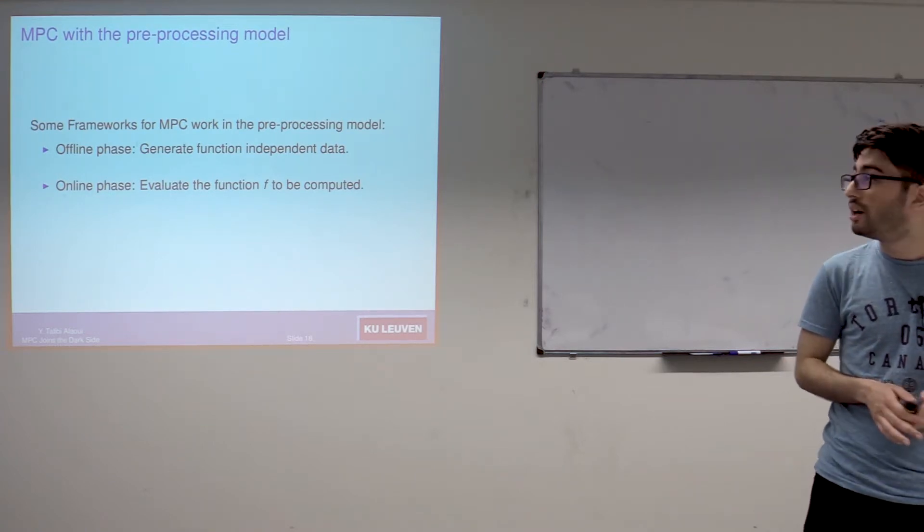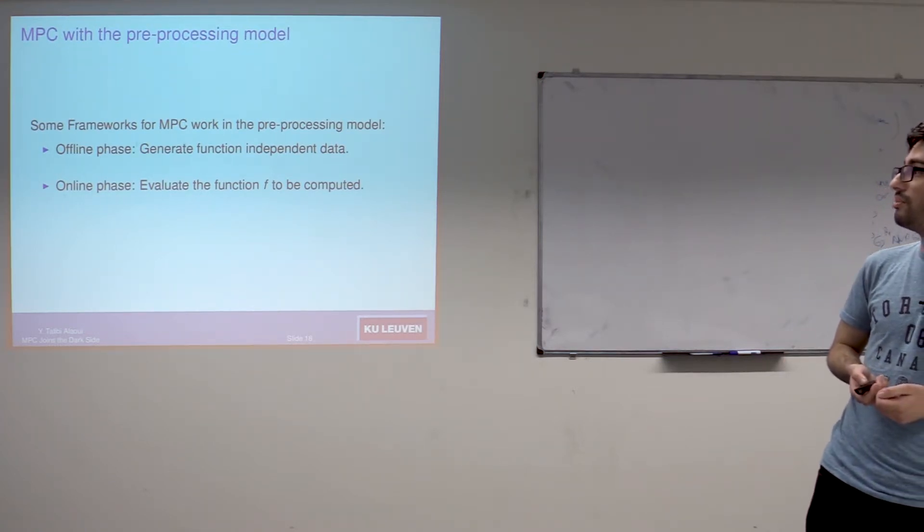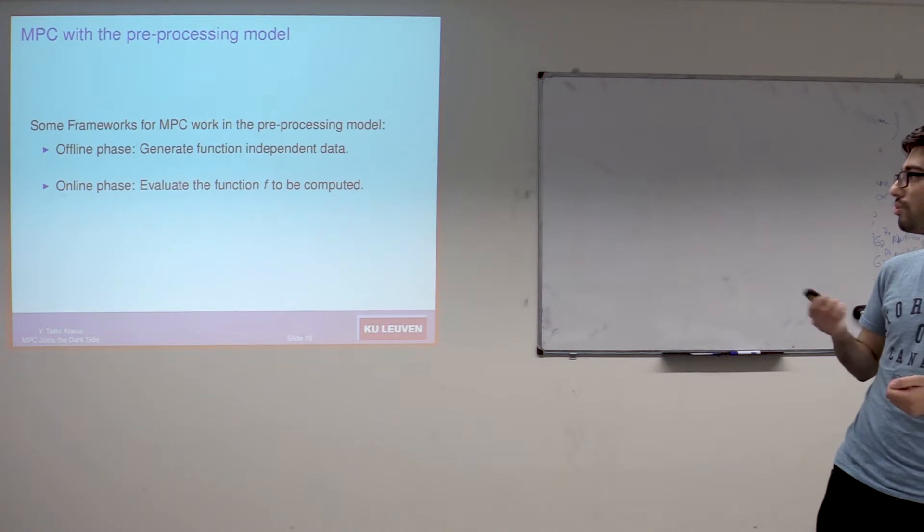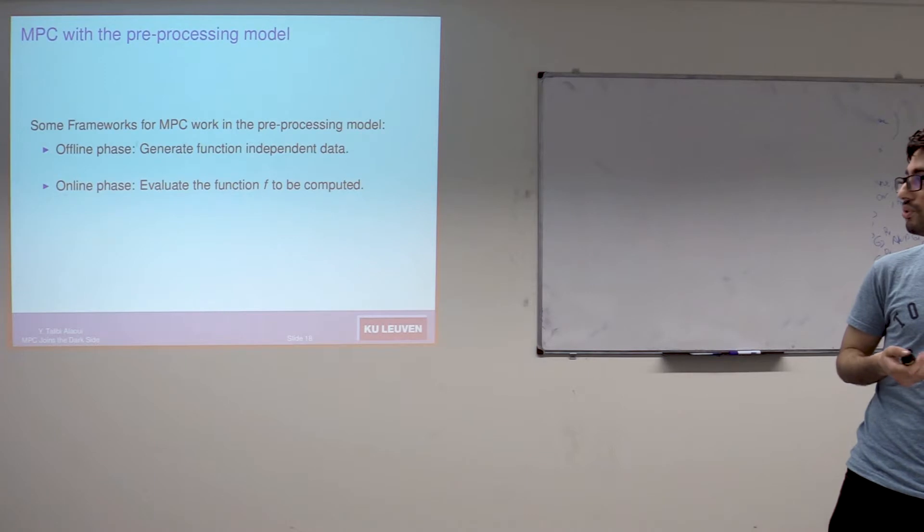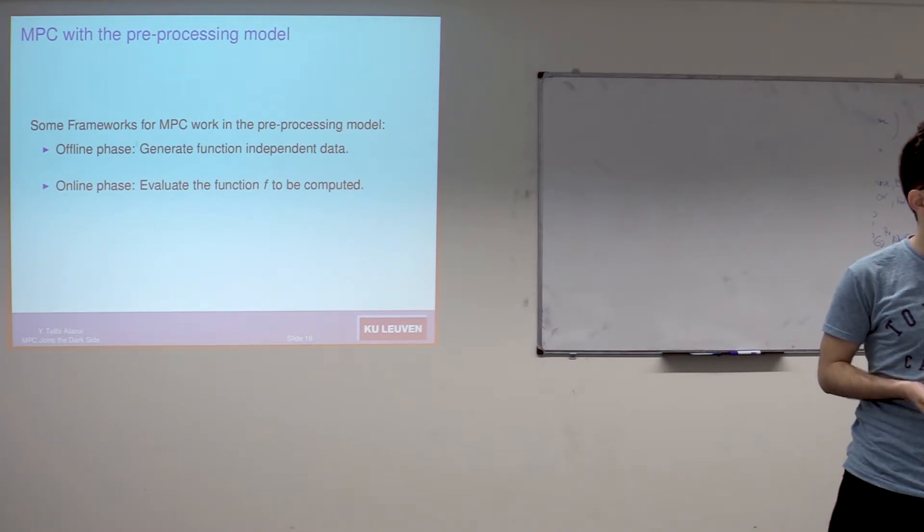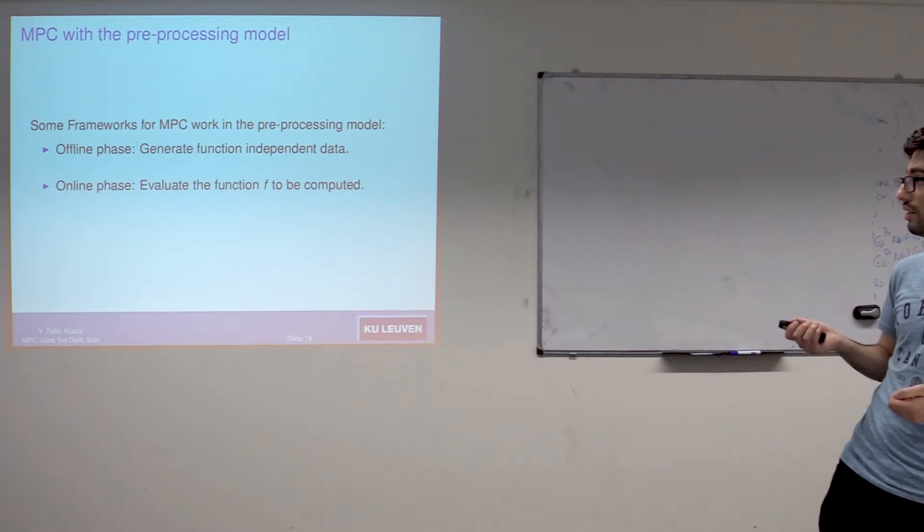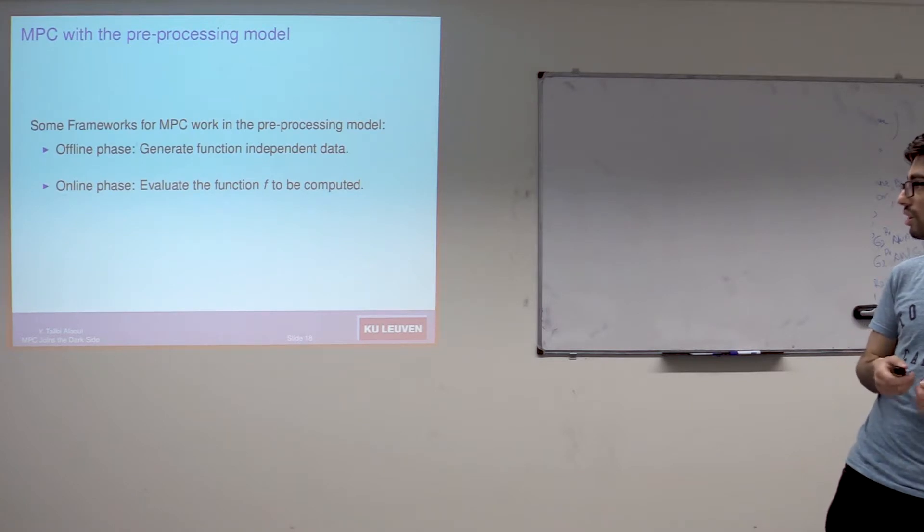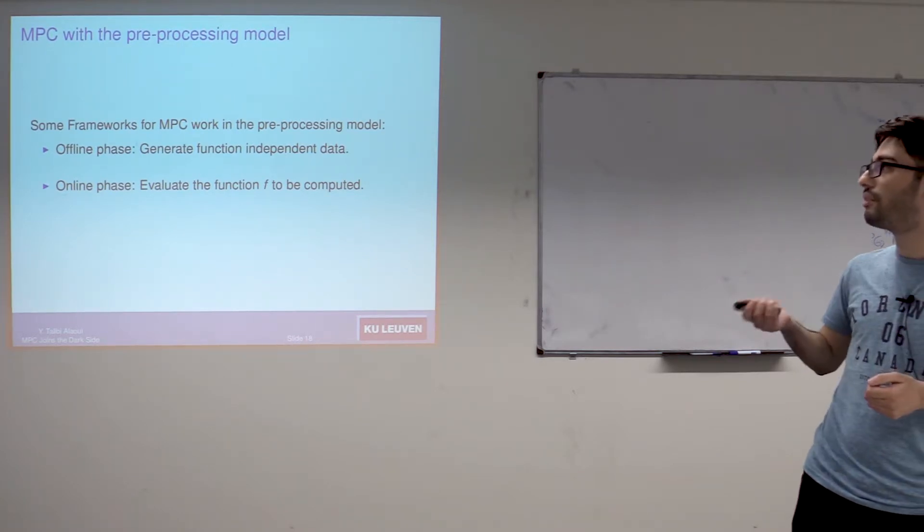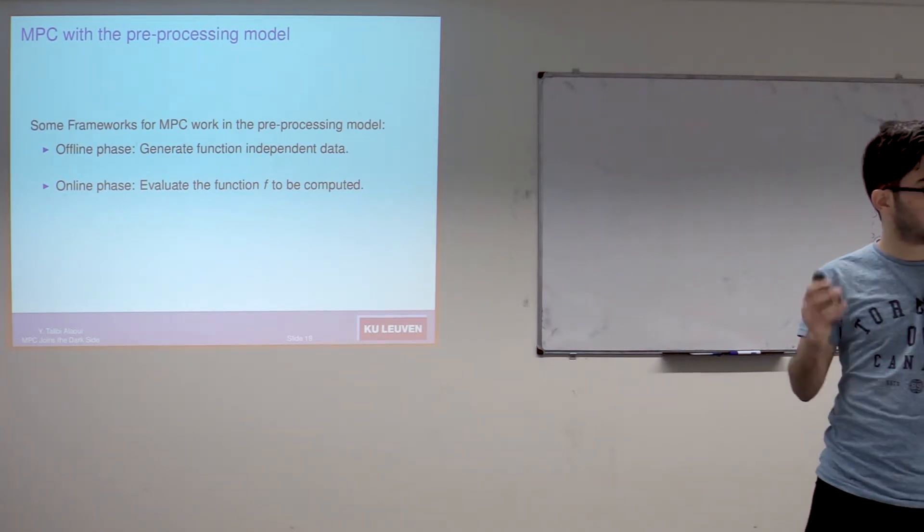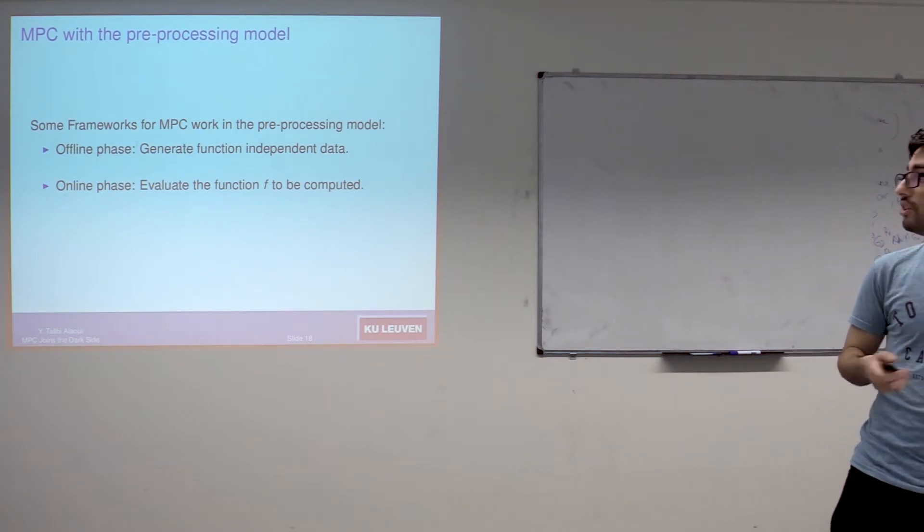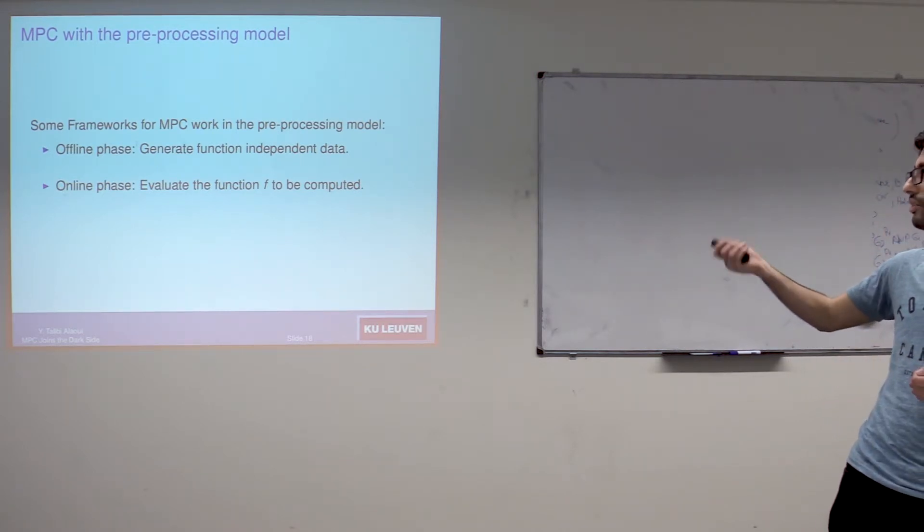Ensuring all of that comes with a price, and the price is the computation is slow. But to make it less slower, some MPC frameworks work in the preprocessing model, where we basically have two phases: the online and the offline phase. In the online phase you compute the function F that you want to evaluate on the inputs. In the offline phase you compute data that doesn't depend on the inputs of the players, so that you make the online phase faster.